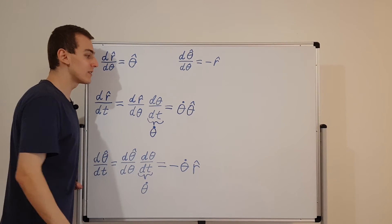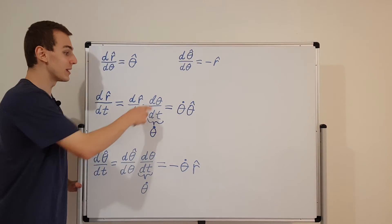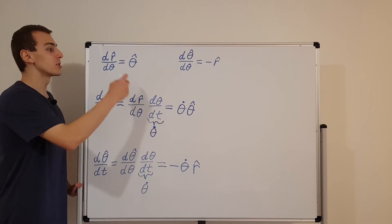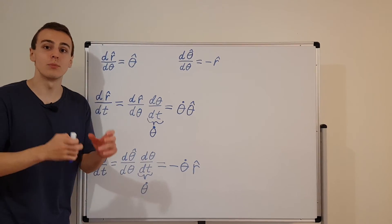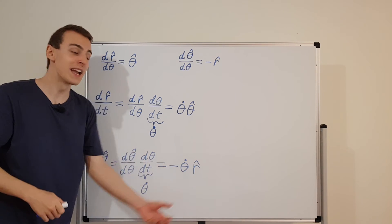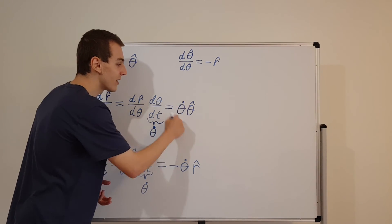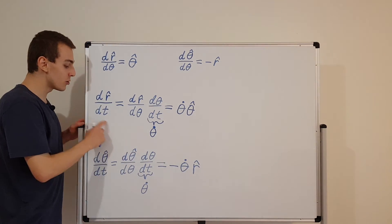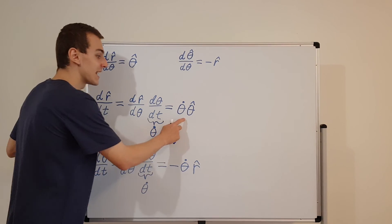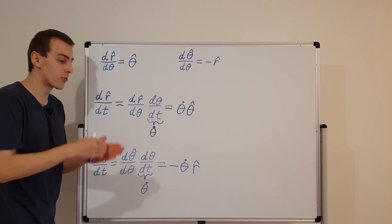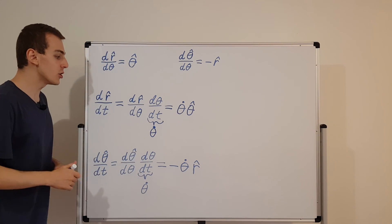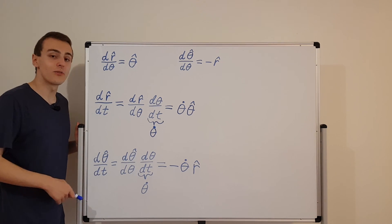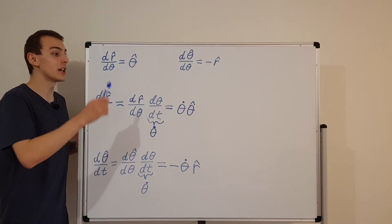When we differentiate with respect to time, we must keep in mind that the angle could also be dependent on time. The angle changes as a function of time, and then the angle forces r hat and theta hat to change. If theta doesn't change with respect to time, then theta dot equals zero, and both of these derivatives are just zero. We'll use these two relationships in later videos — you can find them in the playlist.